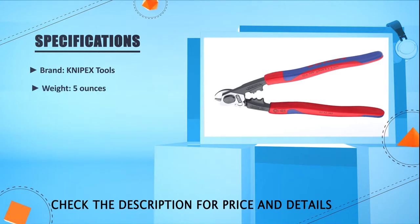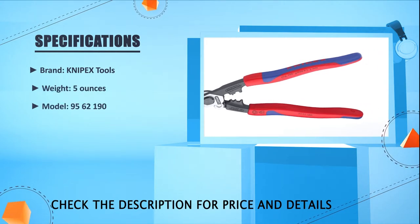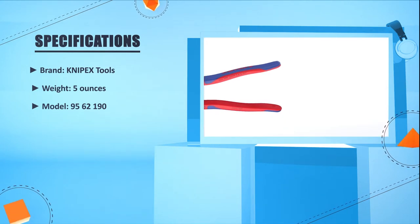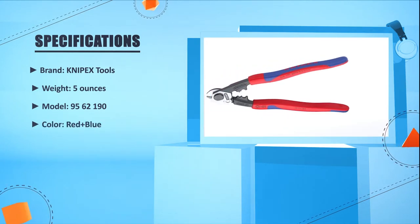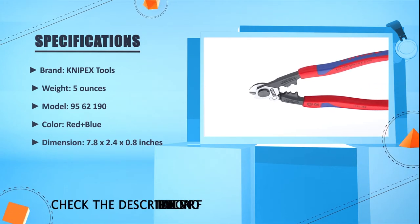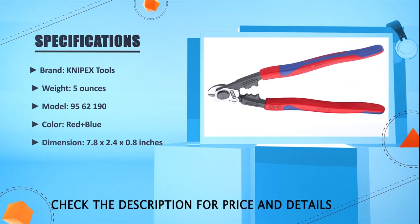Brand: Knipex Tools. Weight: 5 Ounces. Model: 95-62-190. Color: Red Plus Blue. Dimension: 7.8 by 2.4 by 0.8 inches.